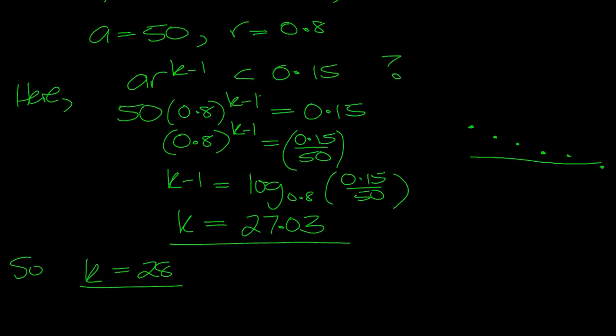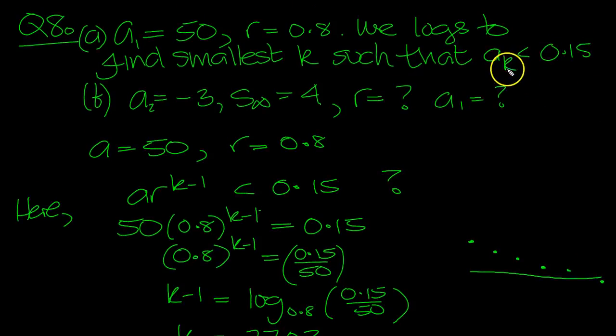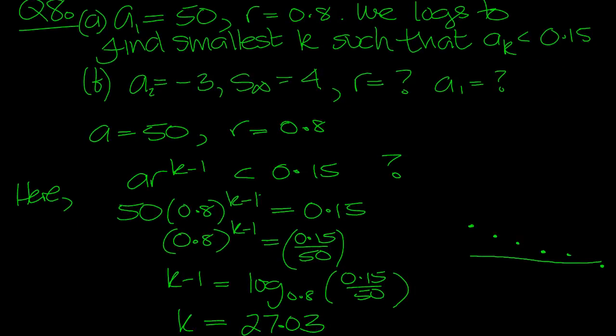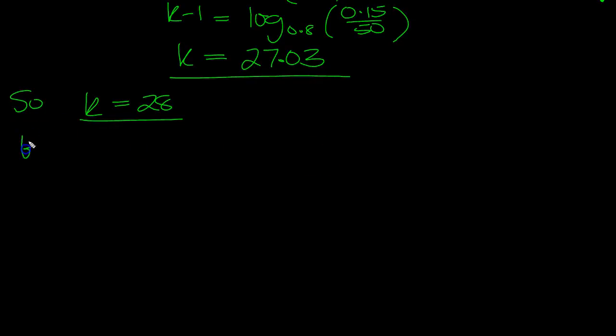Part B. a is minus 3, S infinity is 4. Find r and a. S infinity equals 4. Because it's S infinity, we know that the modulus of r is less than 1. So what does r equal?